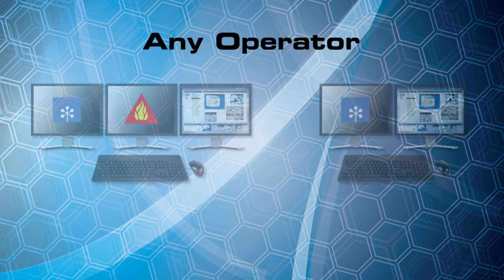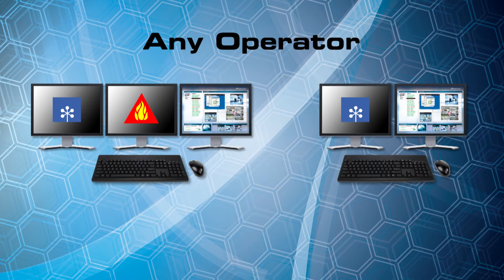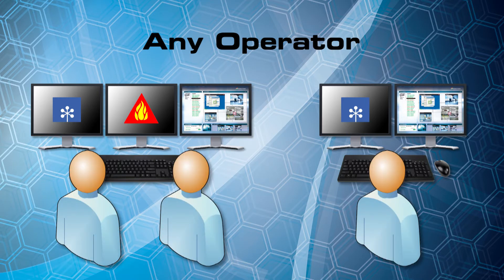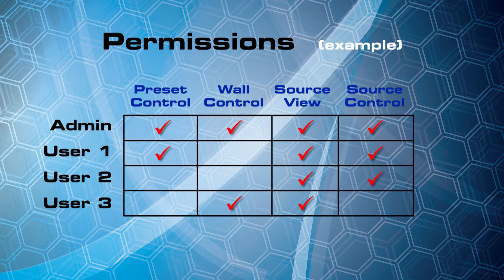You also have any operator. What any operator means really is multiple operators sharing those sources coming in, and those operators could be at the same control station or multiple control stations. Any operator also means we have various permissions for operators and different types of users. So if you have users who need certain permissions to execute certain functionality, to have access to presets to save and recall, or access to certain sources — if you want to lock out certain sources from some users — that's all part of our user aspect of the MCMS system.